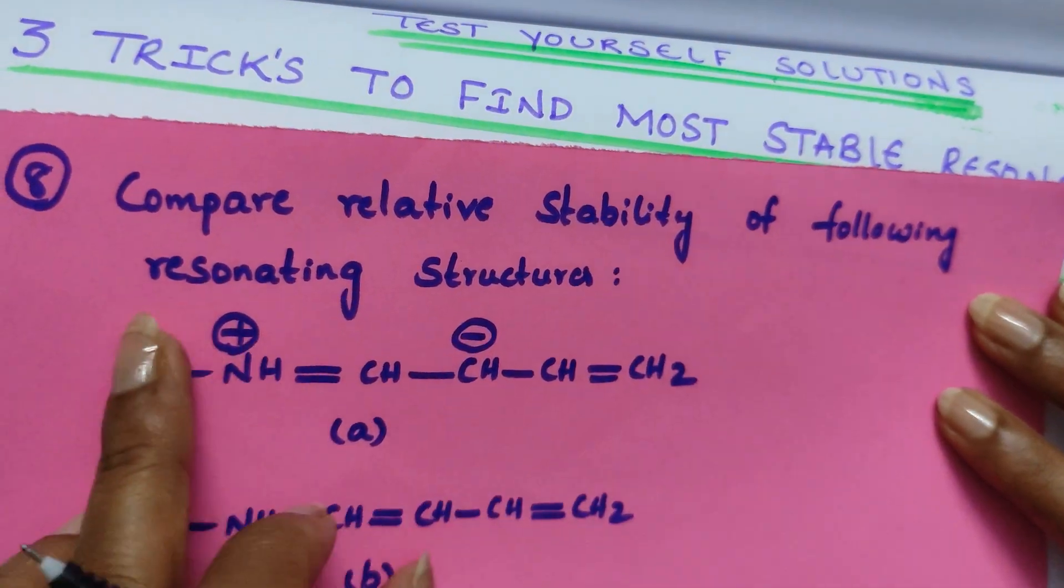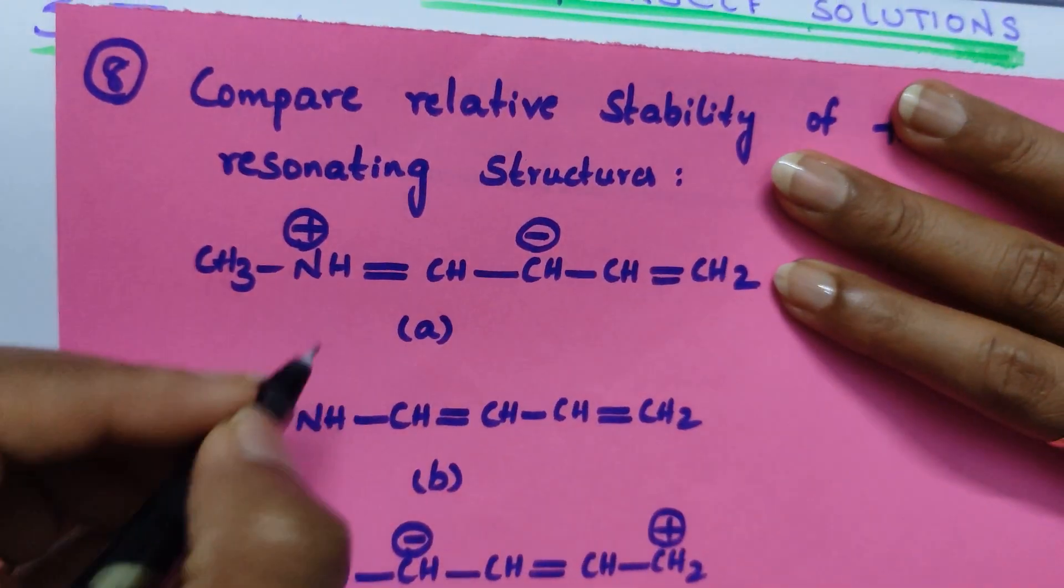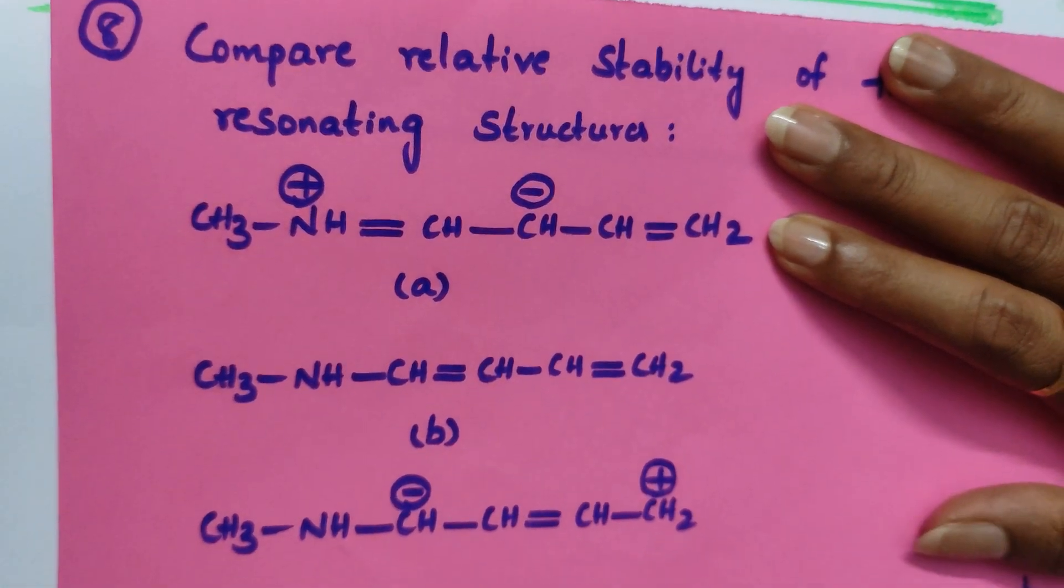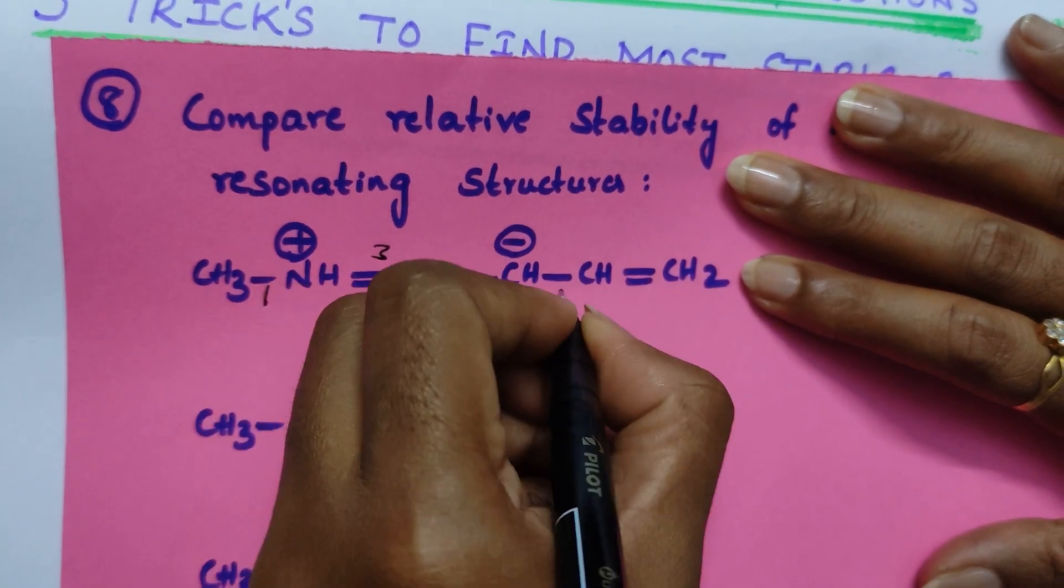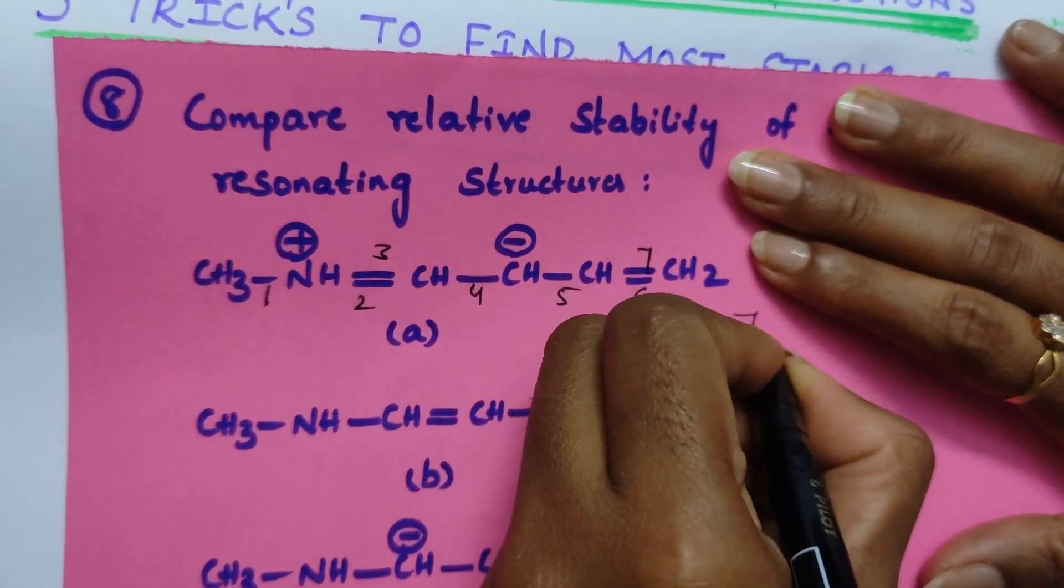Now see the next question. Compare relative stability of the following structures. We have 3 structures. You should find the stability. First count the number of covalent bonds. 1, 2, 3, 4, 5, 6, 7. Seven bonds.